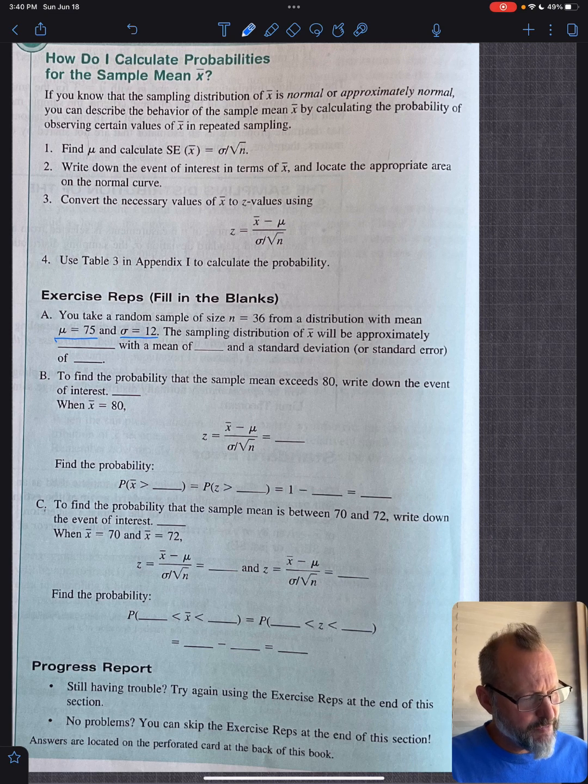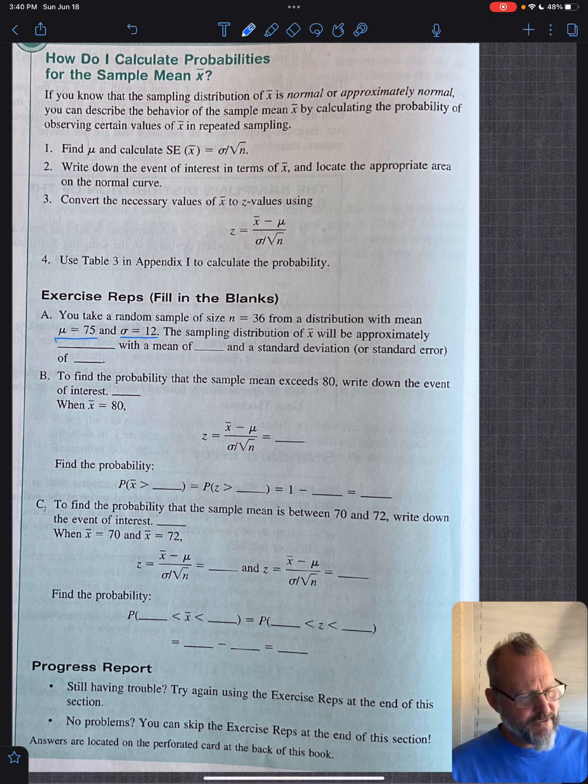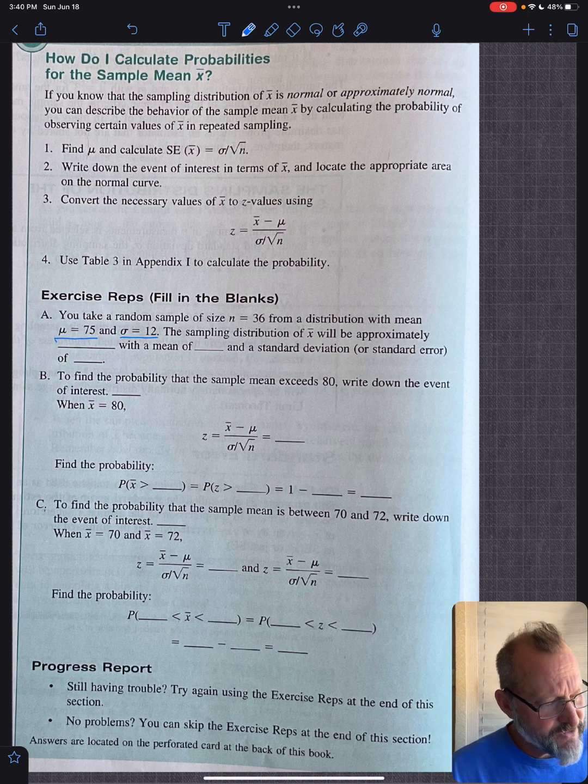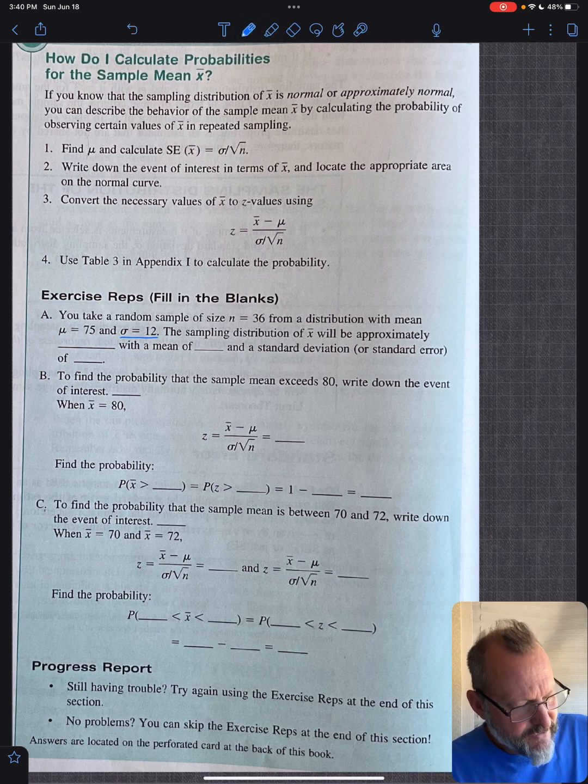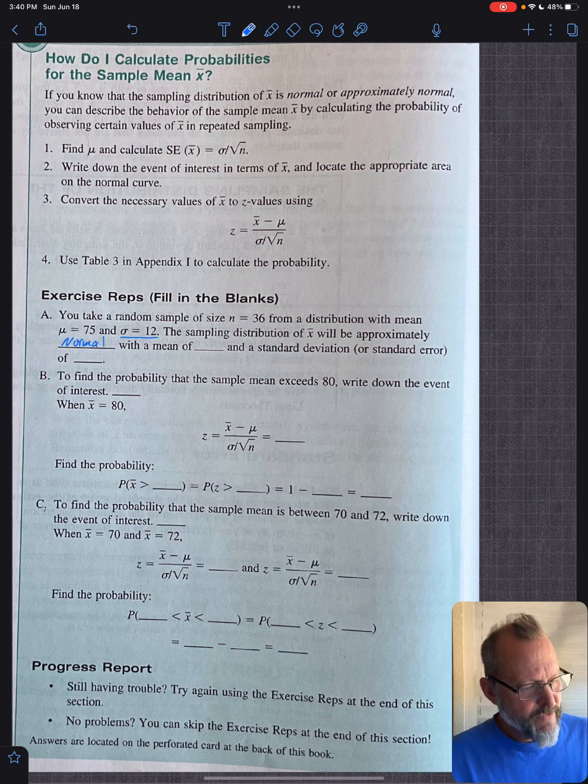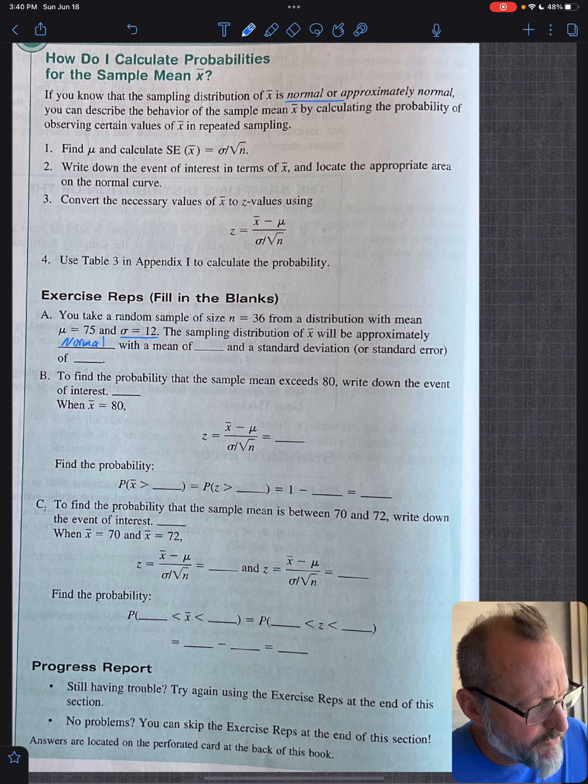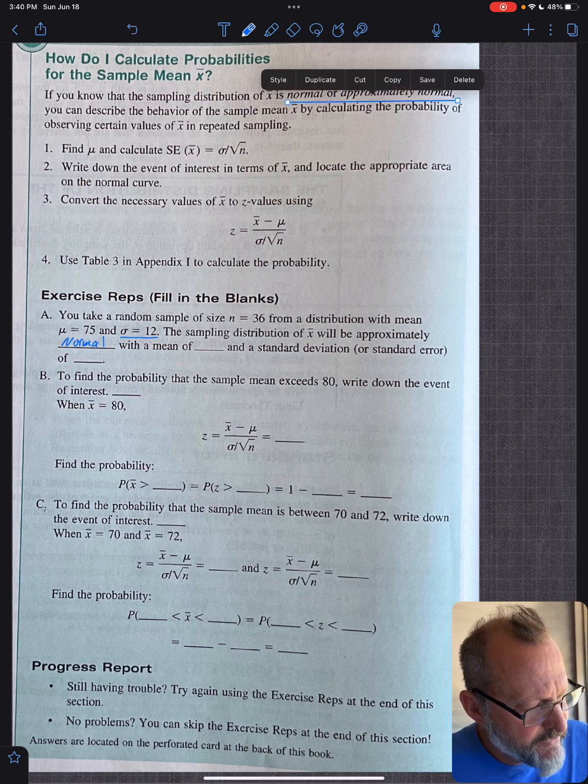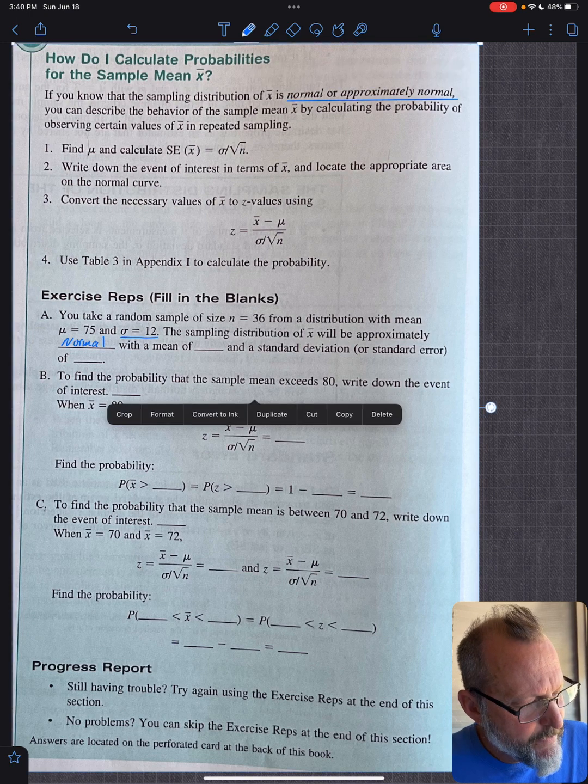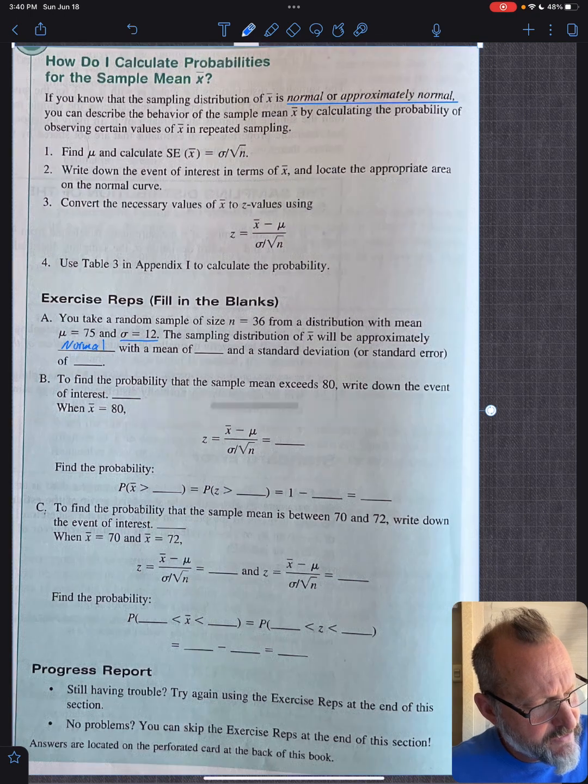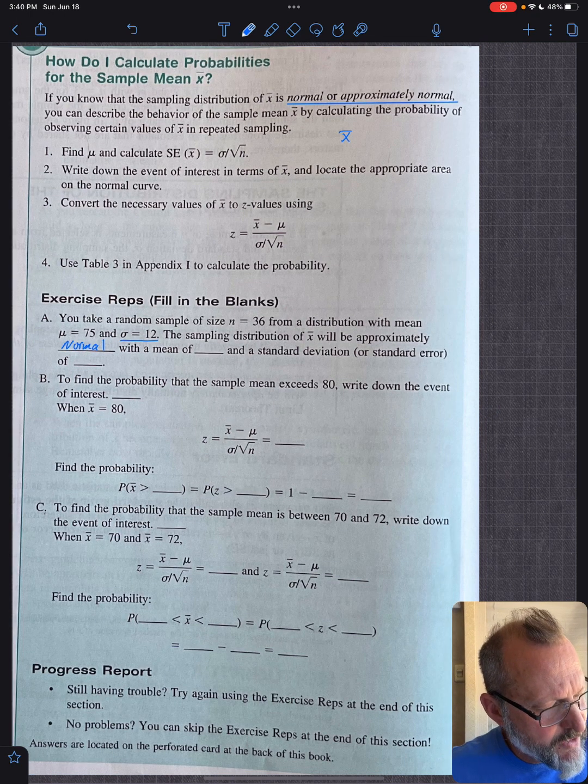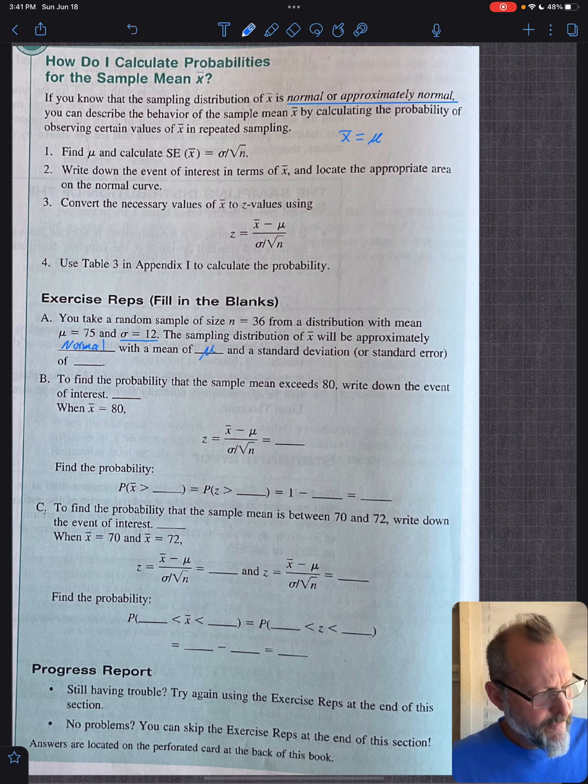That gives you a lot of information, but they still want you to do this. The sampling distribution of X bar will be approximately what? Well, if it's from a random sample, the sampling distribution will approximately what? That should say normal right there. So this is normal. With a mean of what? The mean of a sampling distribution has to match. We know from that that X bar has to equal mu. That's the assumption we're making. So this is mu with a mean of mu.